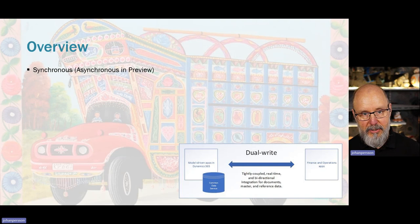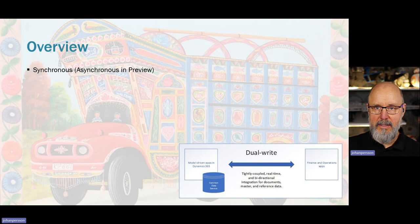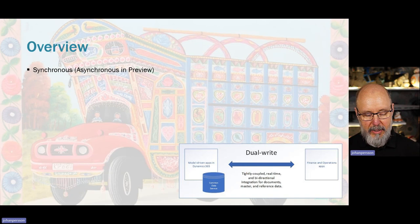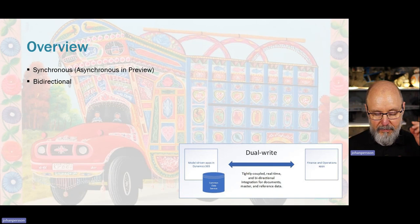Dual Write is a synchronous integration between the two different Dynamics main application suites: Finance and Supply Chain on one side, and CRM, Sales, and Field Service on the other side. It's basically an integration between FNO and Dataverse because it syncs data to two different tables. It is synchronous, meaning that when we do a change on one end it also changes on the other end.